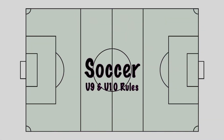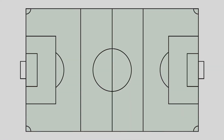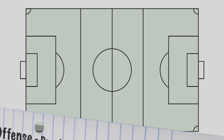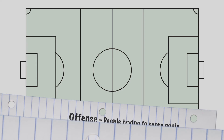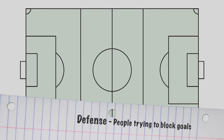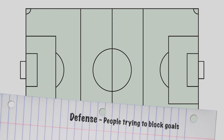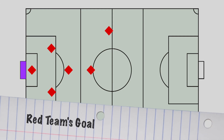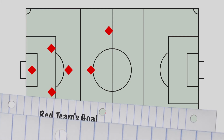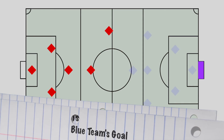Let's go over the basic rules of soccer. As you probably already know, the point of the game is to get the ball into the goal at the end of the field. The players trying to score a goal are called offense, and the players trying to stop the other team from scoring are called defense. The goal that a team is trying to defend is their goal, so players try and score on the other team's goal.